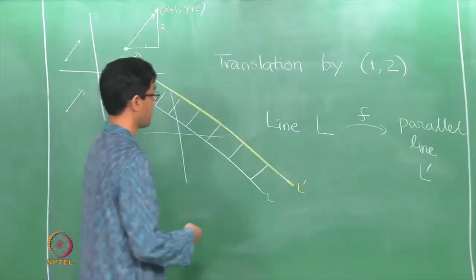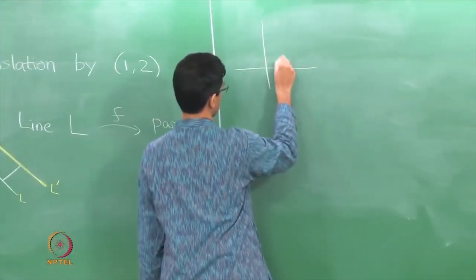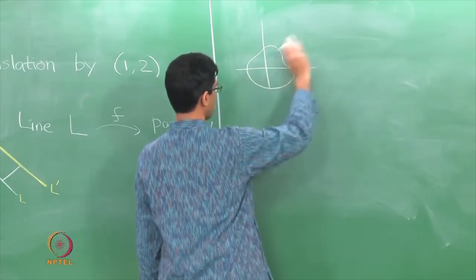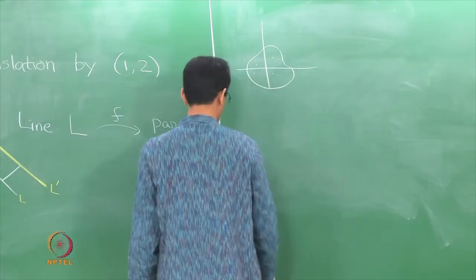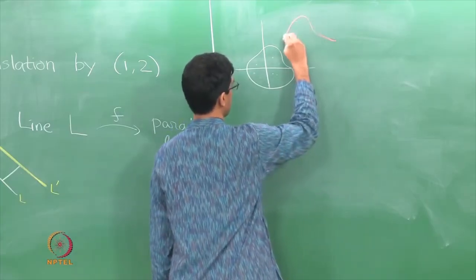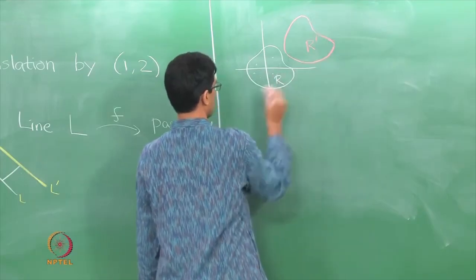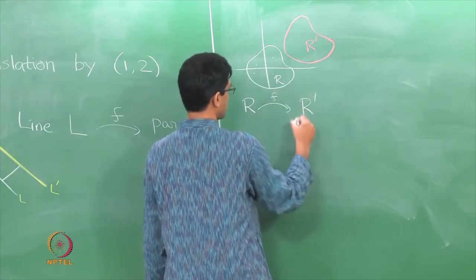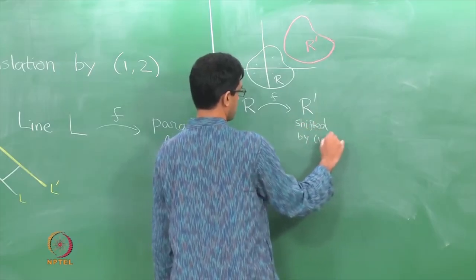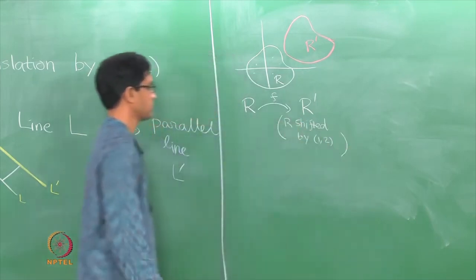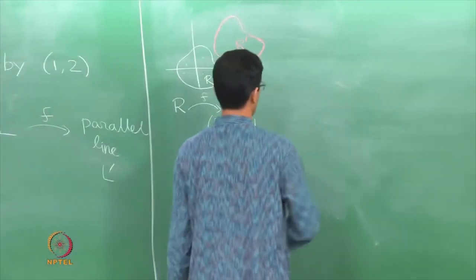You can think of the same thing for a circle — it will go to a shifted circle, shifted by (1, 2). More generally, if I have a region on the plane, all points of that region move by that amount. So the function moves the region to a new region R′, which is just R shifted by (1, 2). The translation is very easy to describe — it just does the same thing everywhere, moving everything by some fixed amount.